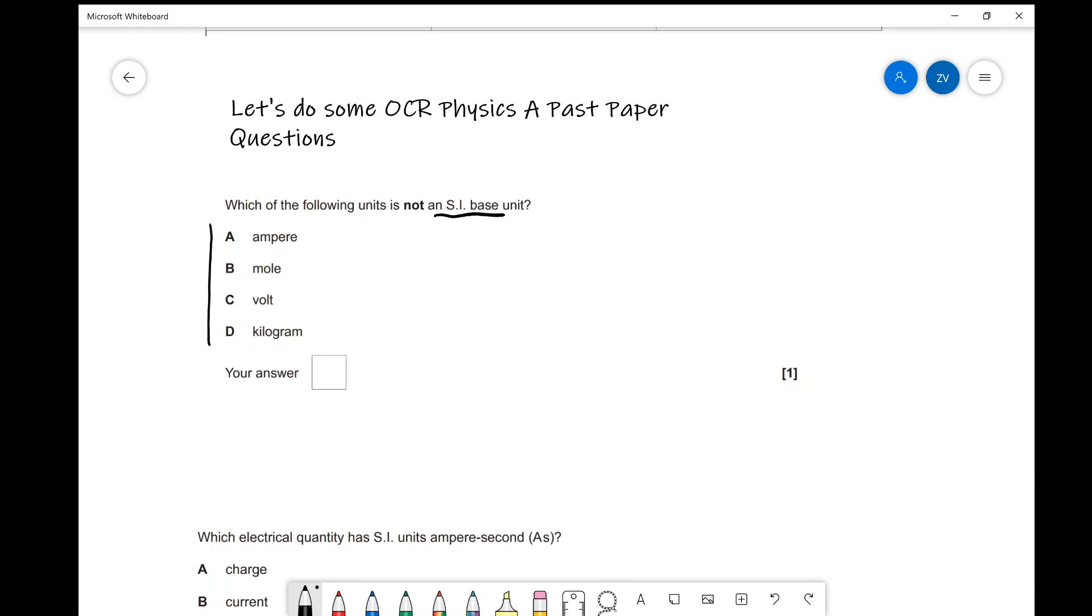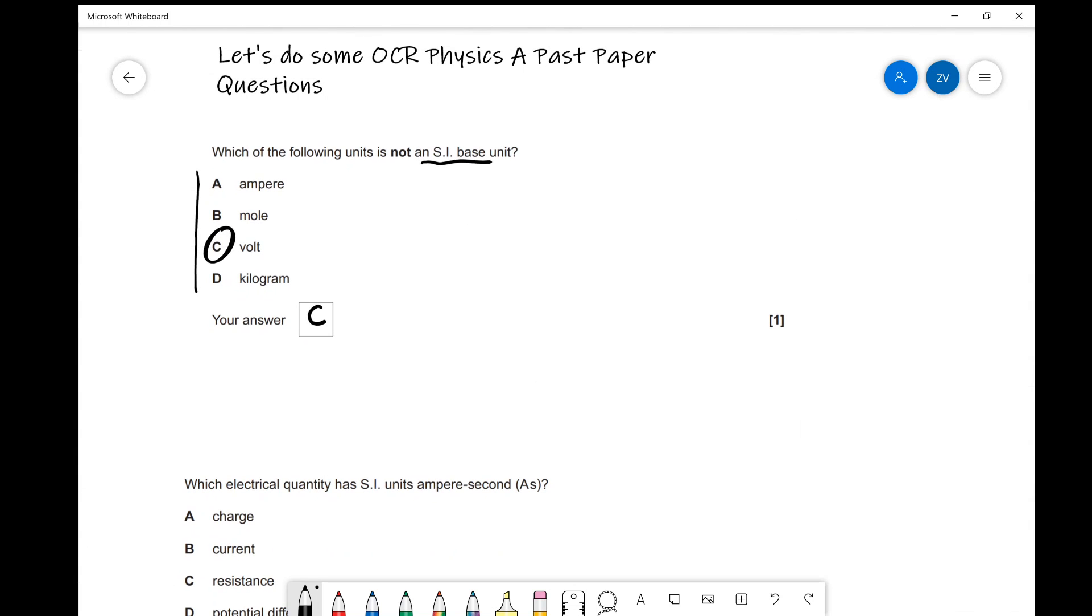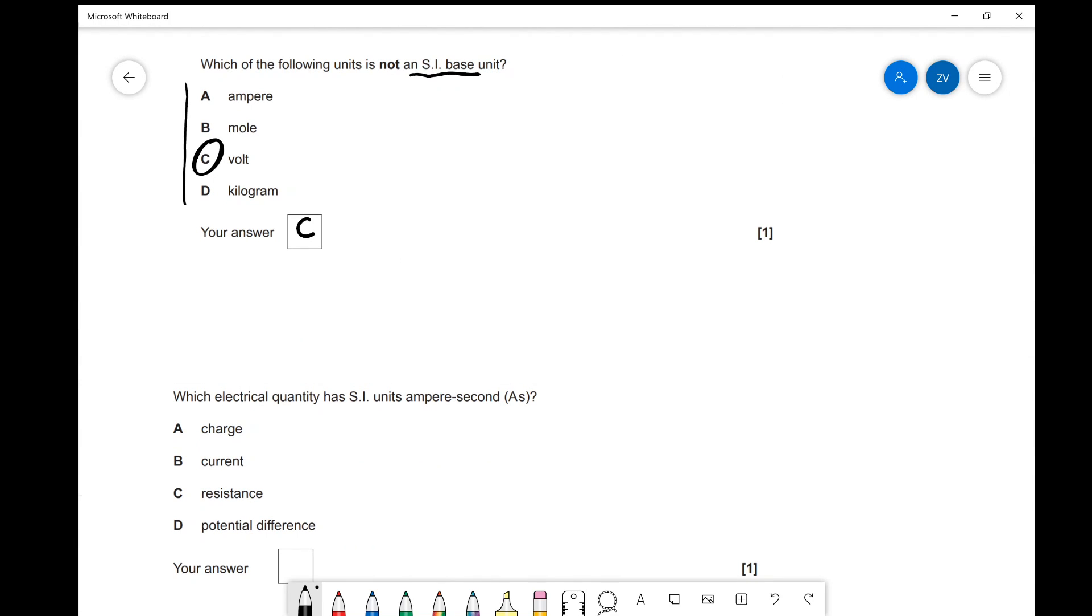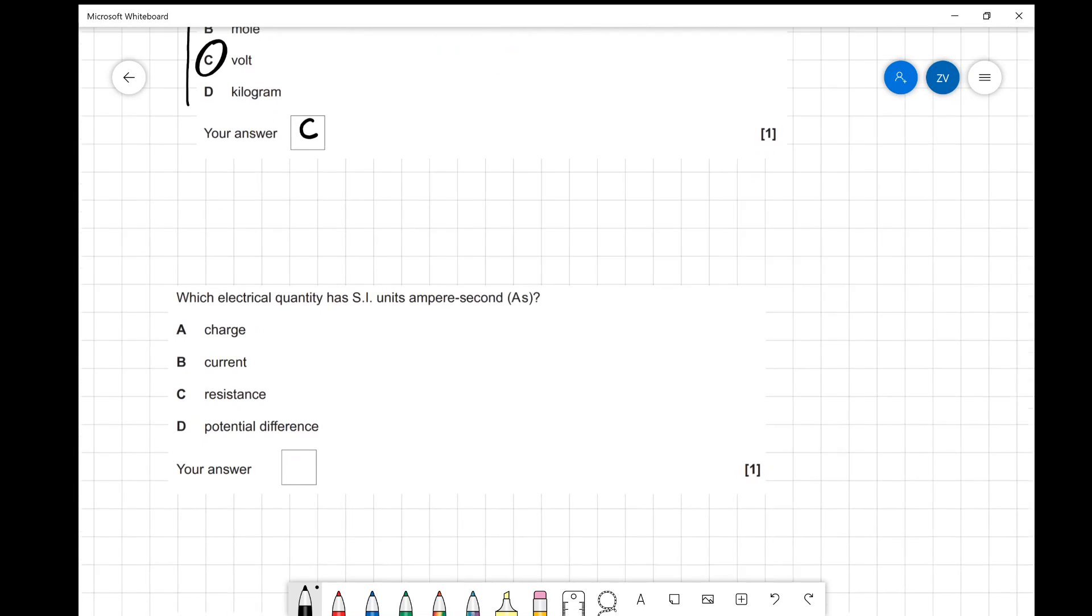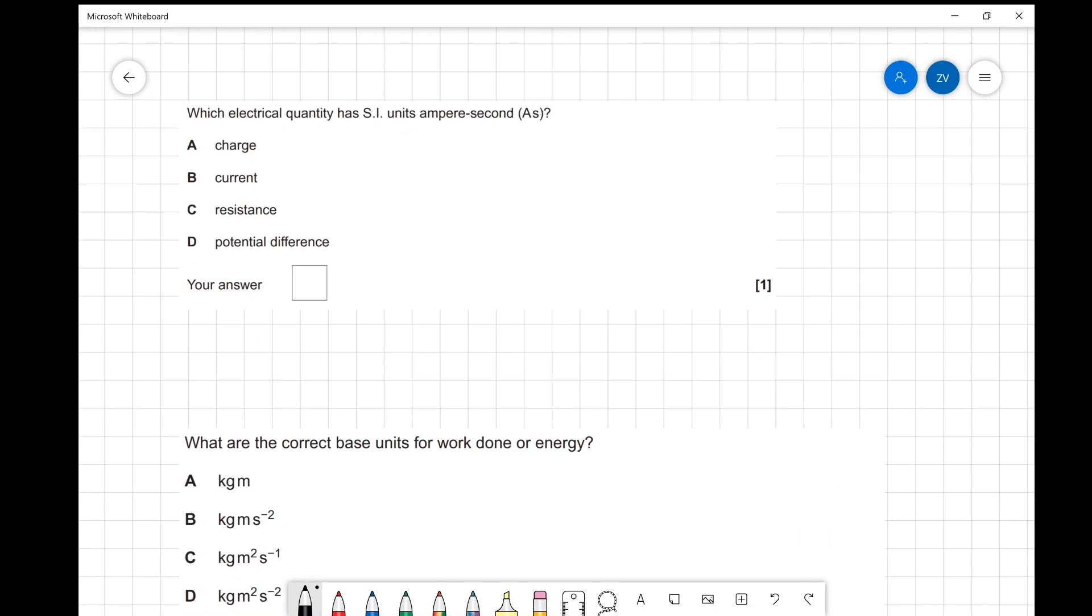So going back to this, we know that the amp or the ampere is in there, so that is a base unit. We know the mole is a base unit. But aha, it is the volt. So that was not in the table up there. So in this case, the correct answer is C, the volt. And that will be one mark in a multiple choice question exam.